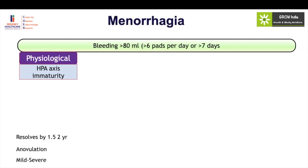Usually this type of heavy menstrual bleeding resolves in a year or two once the anovulatory cycles change to ovulatory cycles. Usually these are mild cases, but sometimes they can be severe. Treatment is needed if the menorrhagia is actually affecting social life and causing anemia, even when pathology is not present.